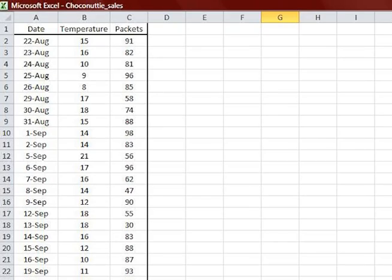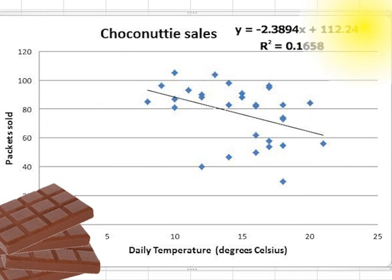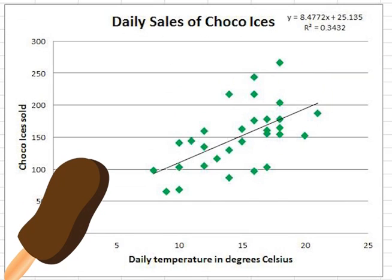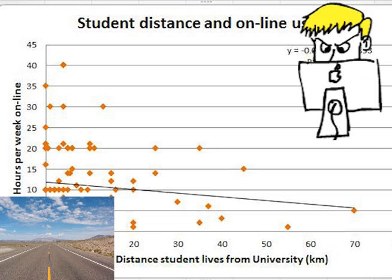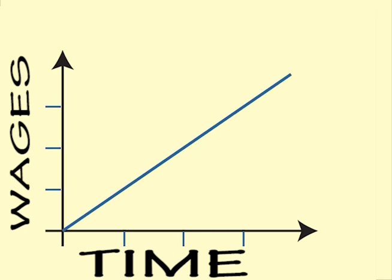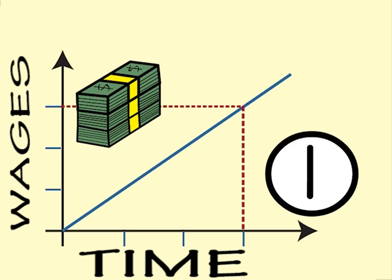Sometimes we want to look at the relationship between two variables in a set of data. Examples are sales of chocolate and daily temperature, sales of ice cream and daily temperature, or distance from university and amount of time spent online. A graph can help to show how a change in one variable relates to a change in another variable.